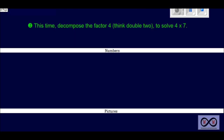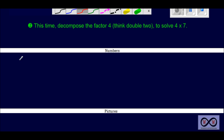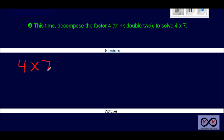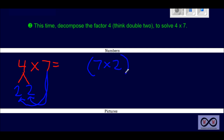Now let's move on to the second page. This time we're going to decompose the factor four — you can think double two — to solve four times seven. Let's rewrite our expression: four times seven. This time we're going to decompose the four. Two plus two equals four, and twos are easy to work with in multiplication. So we'll take the seven and distribute it: seven times two plus seven times two, which is essentially the same as four times seven.